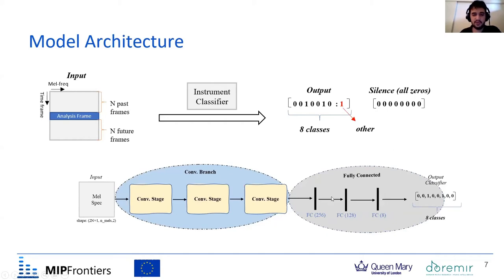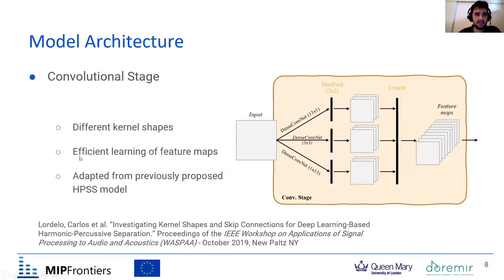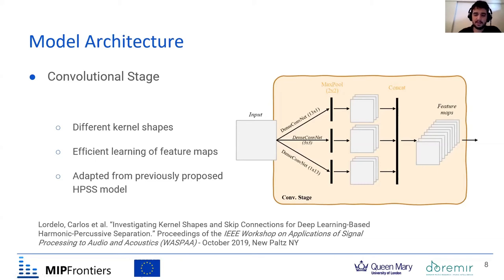We have a central frame of analysis, taking past and future frames, and tried to recognize which instruments were playing in the central frame based on this input. The model is a convolutional branch followed by three fully connected layers with eight classes at the end. The convolutional stages are based on a previously proposed HPSS model published at WASPAA last year, using different kernel shapes: three-by-three filters, vertical filters, and horizontal filters, followed by max-pooling layers and concatenation. This structure is repeated three times before feeding into the fully connected layers.